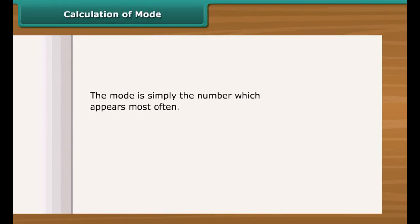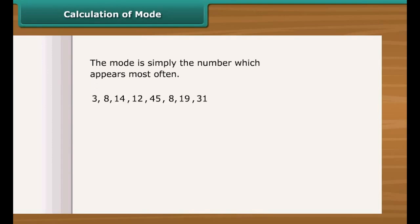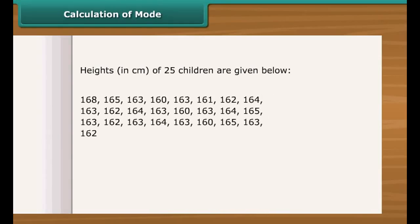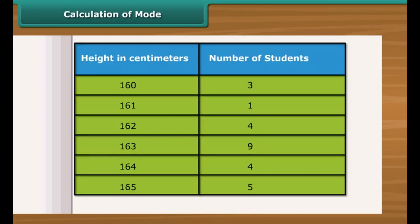The mode is simply the number which appears most often. To find the mode, first put the numbers in order, then count how many of each number there are, and see which number appears most often. In one example, 8 appears two times, so the mode is 8. Looking at the height of 25 children in a class, after ordering the data in a table, 163 appears nine times — so the mode of the children's height is 163.